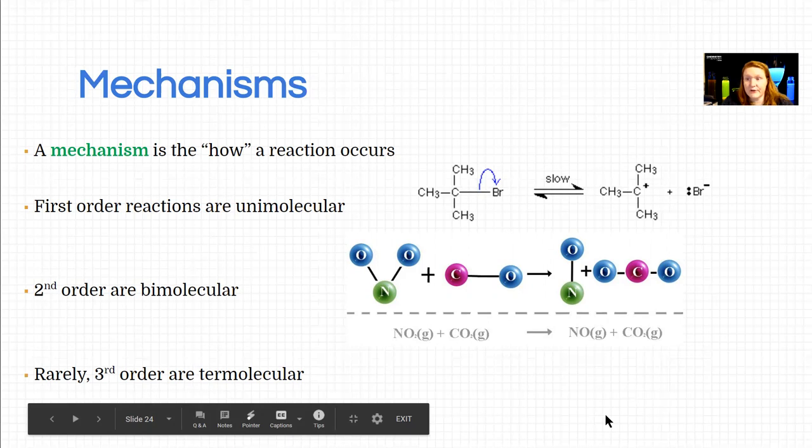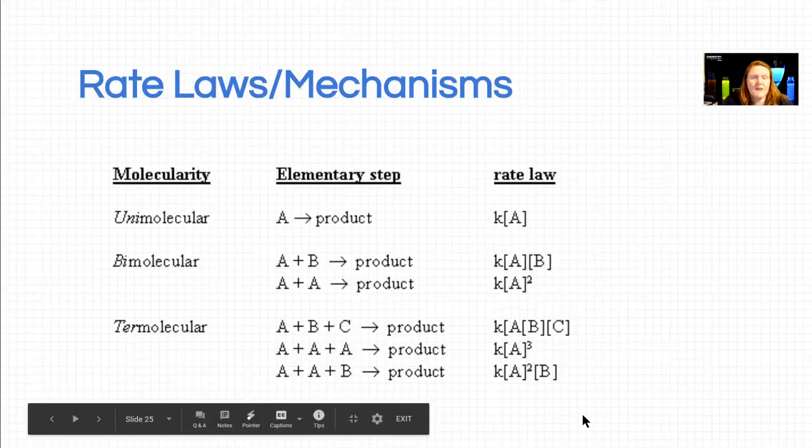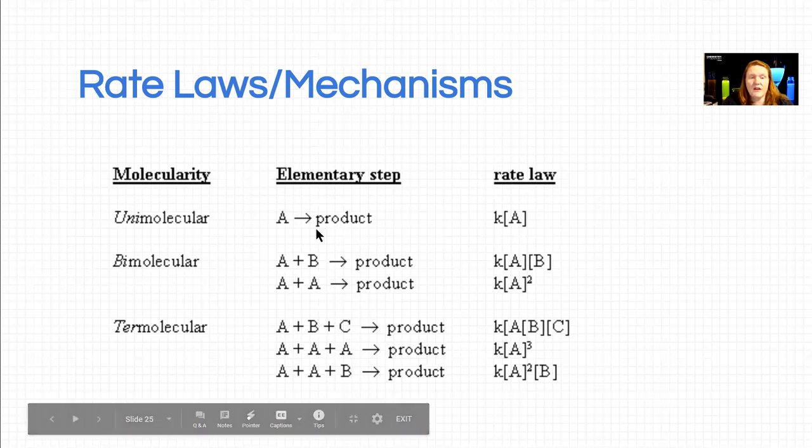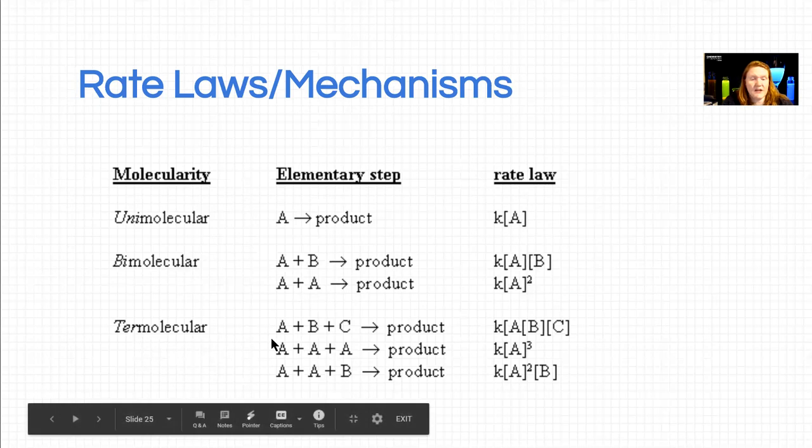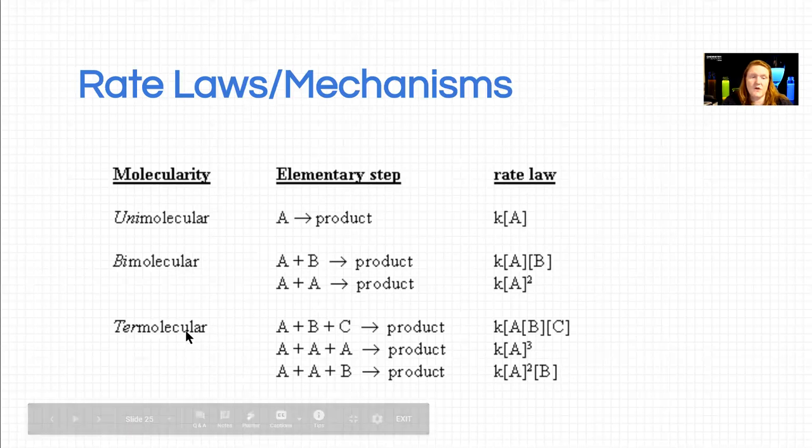This is a nice summary of the different rate laws that might be associated with each overall rate order. If you get unimolecular, it's always first order. But if you get bimolecular, it could mean two different things are coming together, or it could mean two of the same thing are coming together. Termolecular could mean three different things, two things and a different thing. In this case, if I want to increase or decrease, I'm going to mess with A because it's going to have the biggest impact.